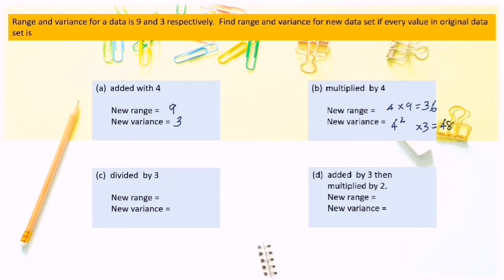If every value in the original data set is divided by 3, with range 9 and variance 5, the new range is 9 divided by 3 equals 3. Whereas the new variance is 3 divided by 3 squared equals one-third.